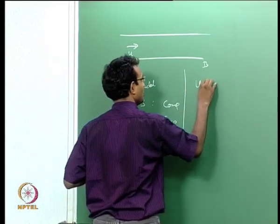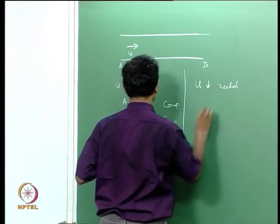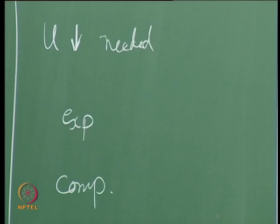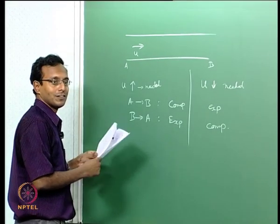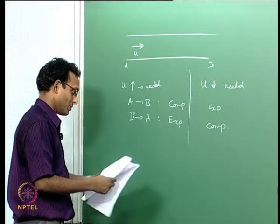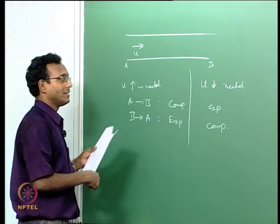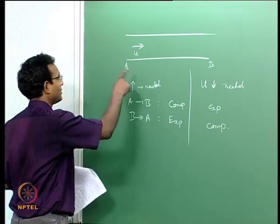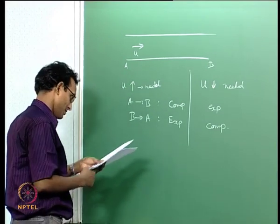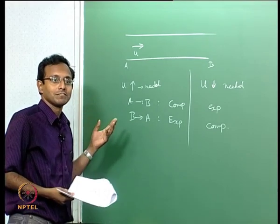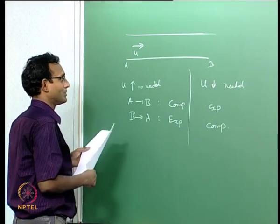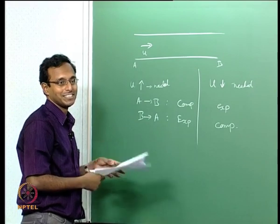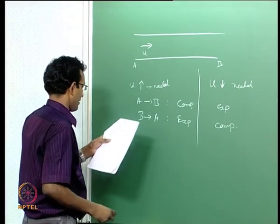The converse is also true: if velocity should decrease, it will be the opposite — expansion and compression reversed. This is very useful in thinking about what can happen in a complicated situation. So in unsteady situations, if I want to increase velocity I have to send one of these two waves — which one depends on whether it is coming from upstream or downstream. In a steady flow condition nothing changes anyway; steady flow cannot change. And if I want to change it quasi-statically, I am going through this process and then saying it makes no more changes.